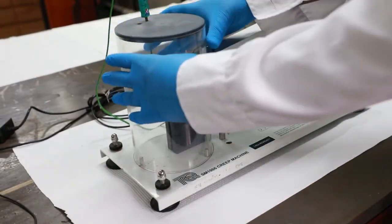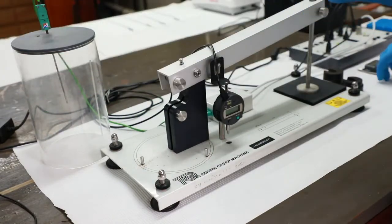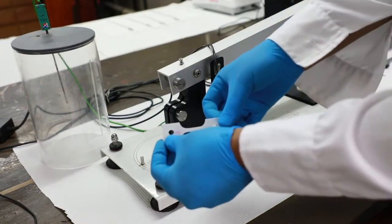Remove the cover and place sample number one vertically into the creep apparatus and secure with two pins while holding the lever arm.